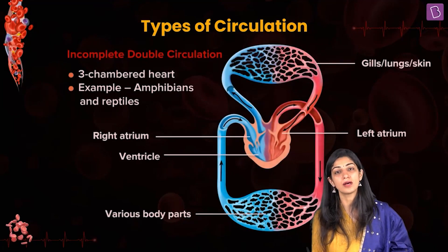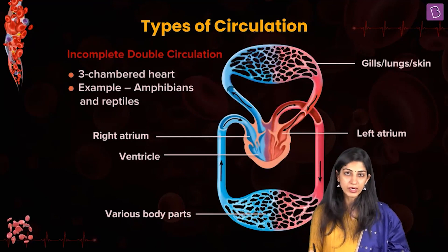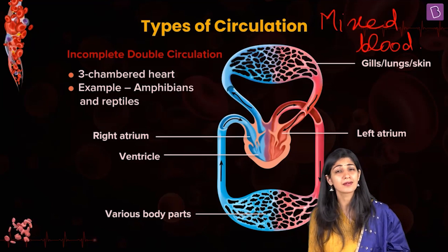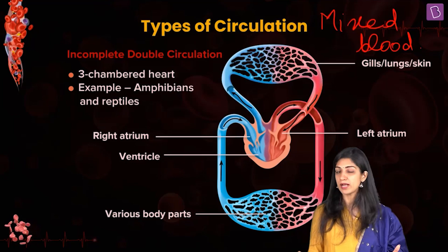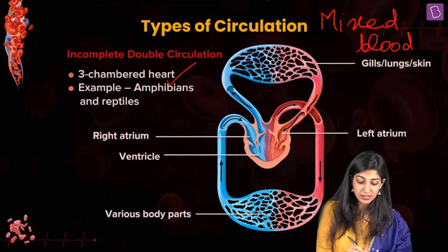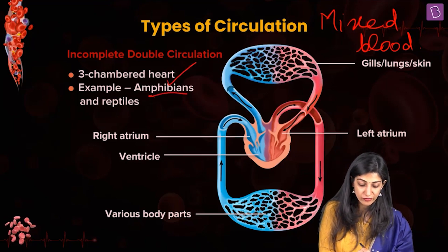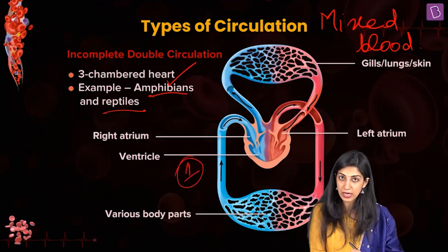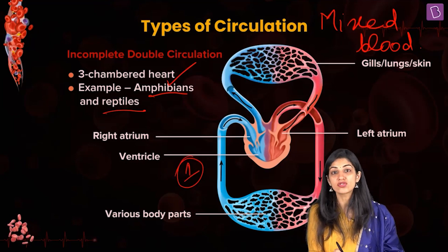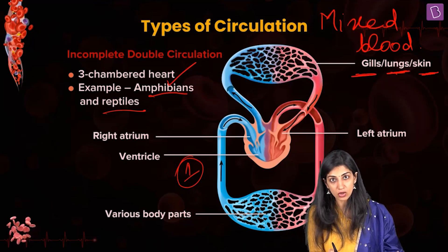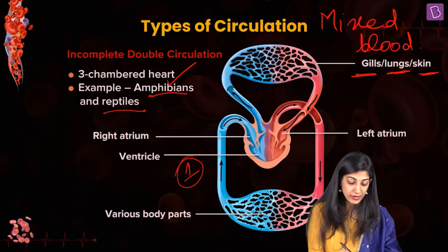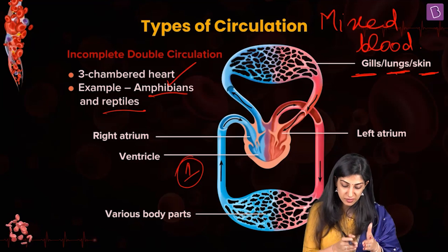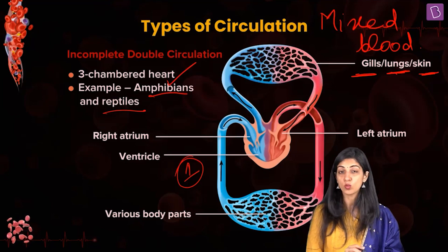Next is incomplete double circulation — the key word is mixed blood. This happens because the heart is three-chambered, seen in amphibians and reptiles except crocodiles. The left atrium receives oxygenated blood from the respiratory organs (gills, lungs, or skin depending on the organism), and the right atrium receives deoxygenated blood from the body parts, but they get mixed in the single ventricle. This mixed blood is then circulated.